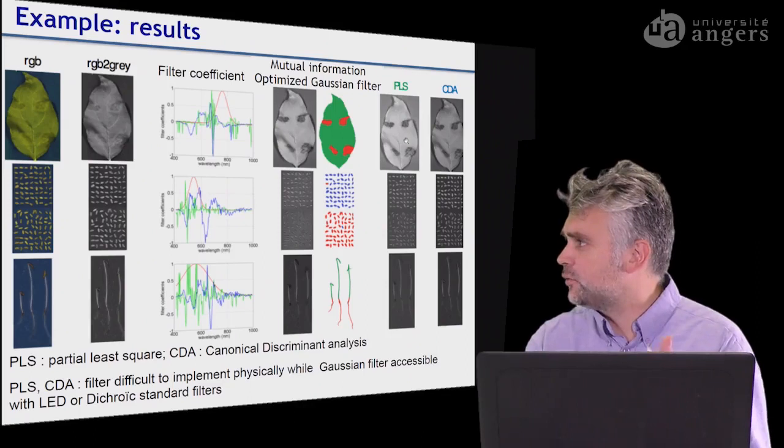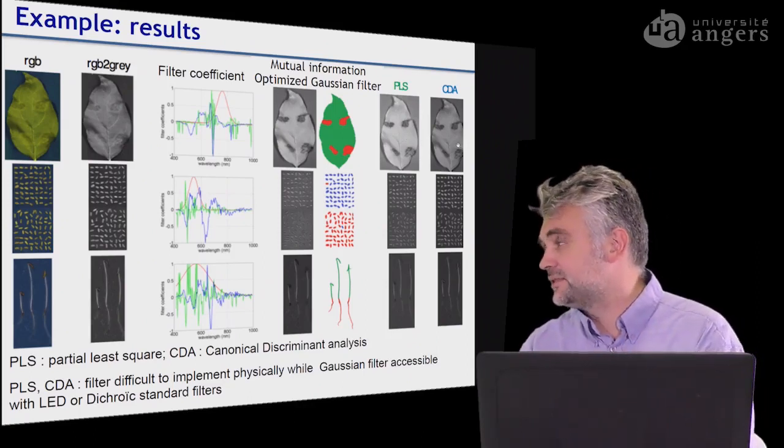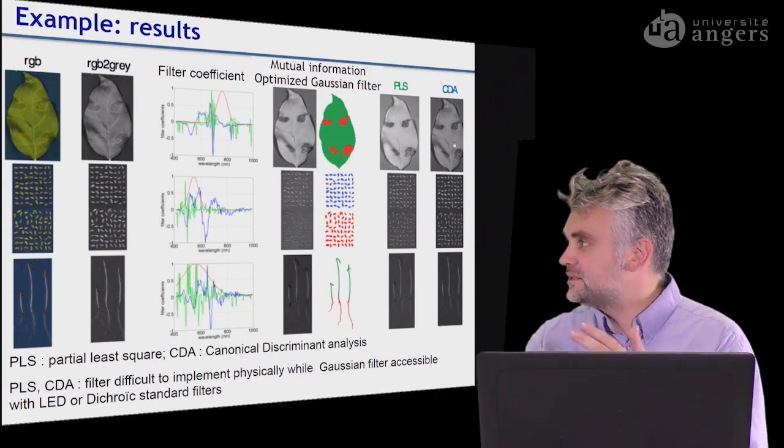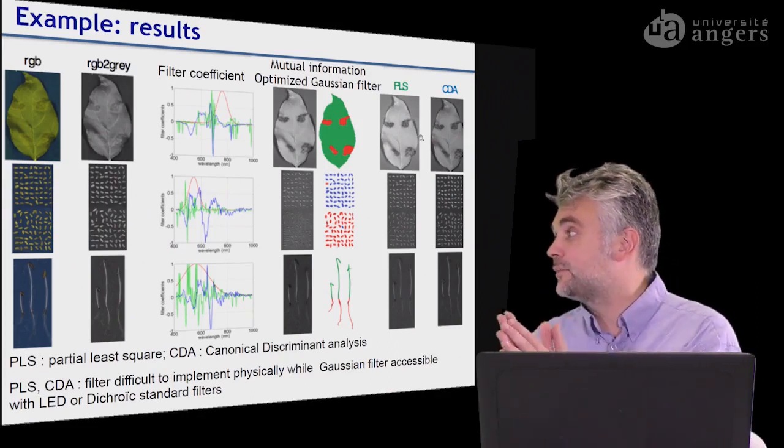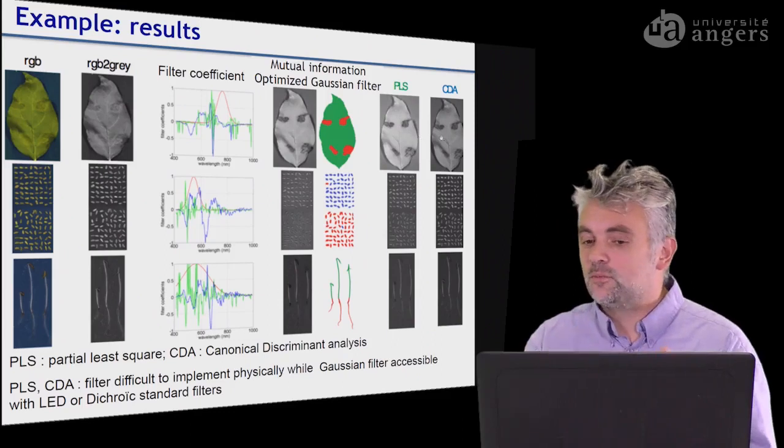That's two different methods. One is partial least square, PLS, and the second is cumulative discriminant analysis, CDA. And you can see that with such approaches that require hyperspectral imaging, the contrasts are almost the same.